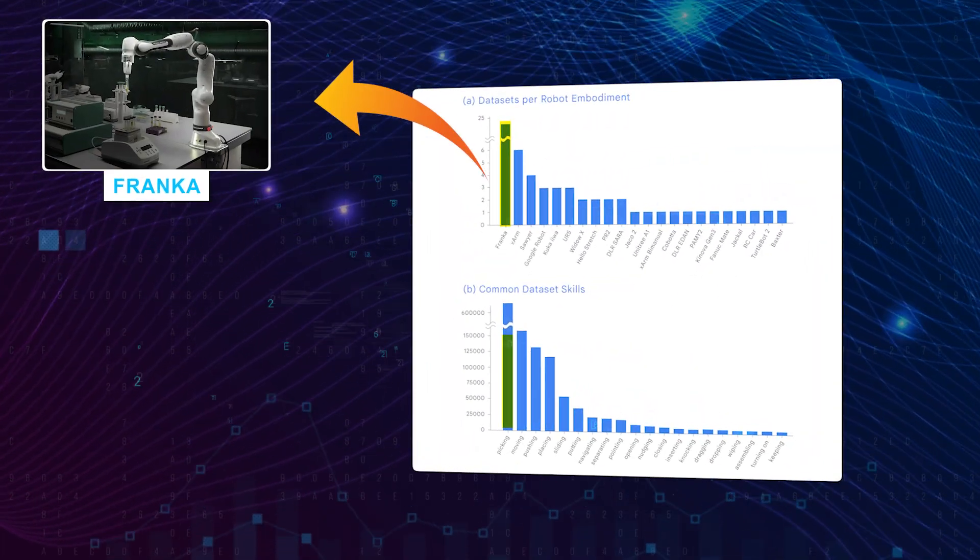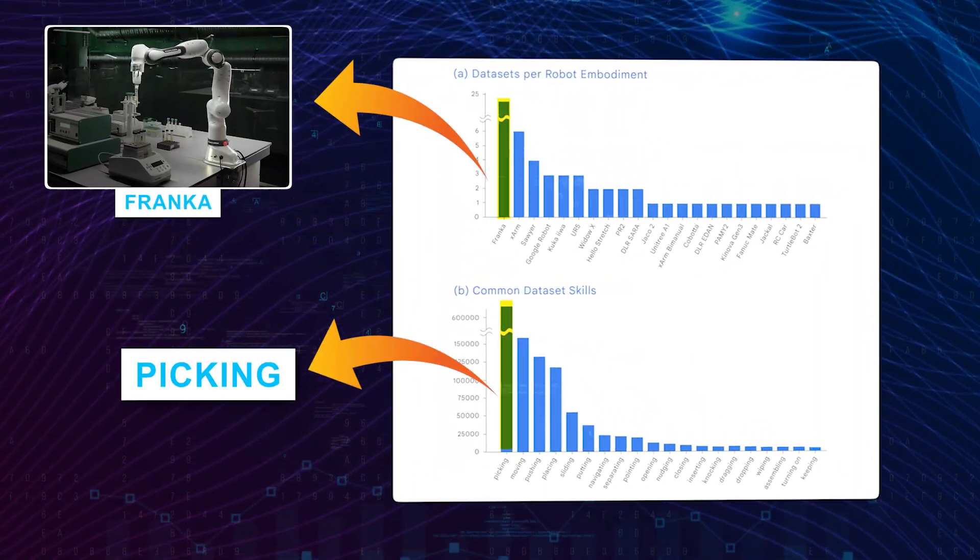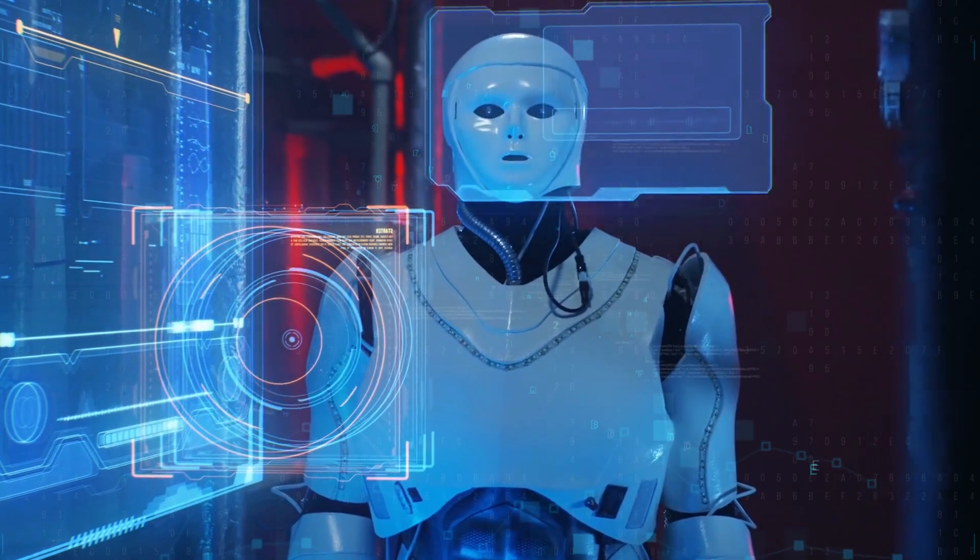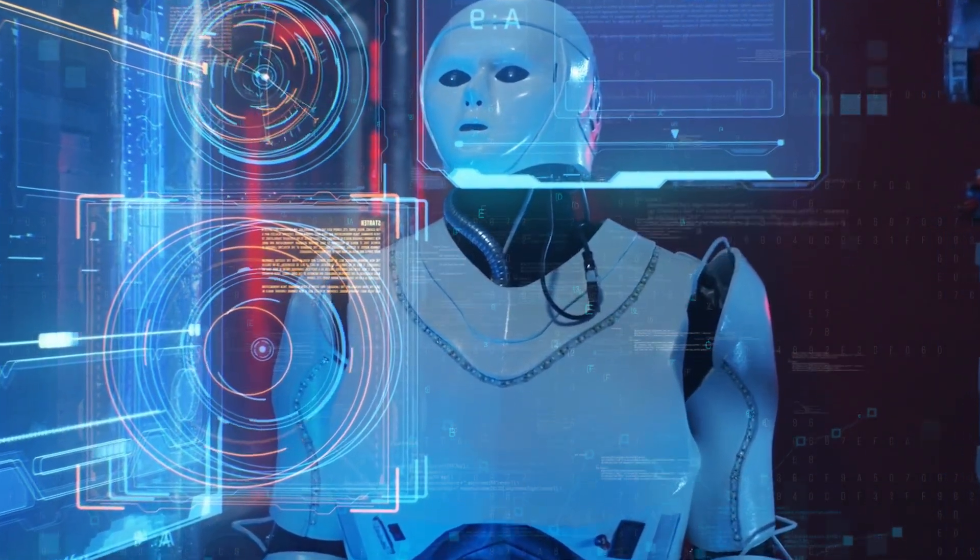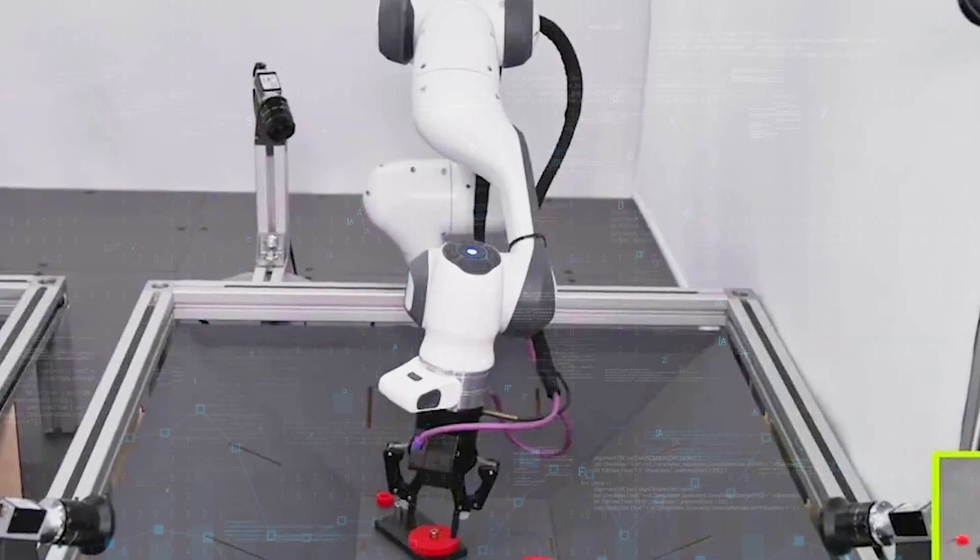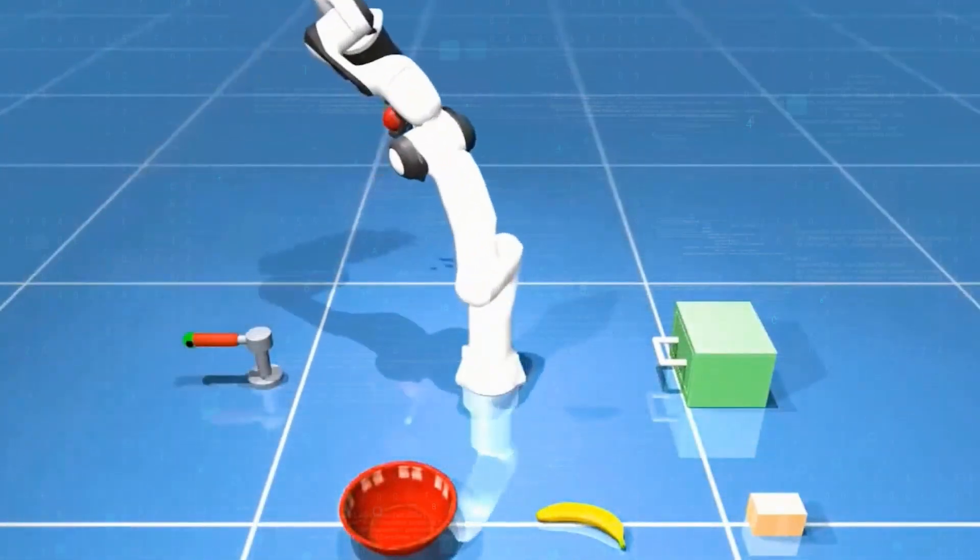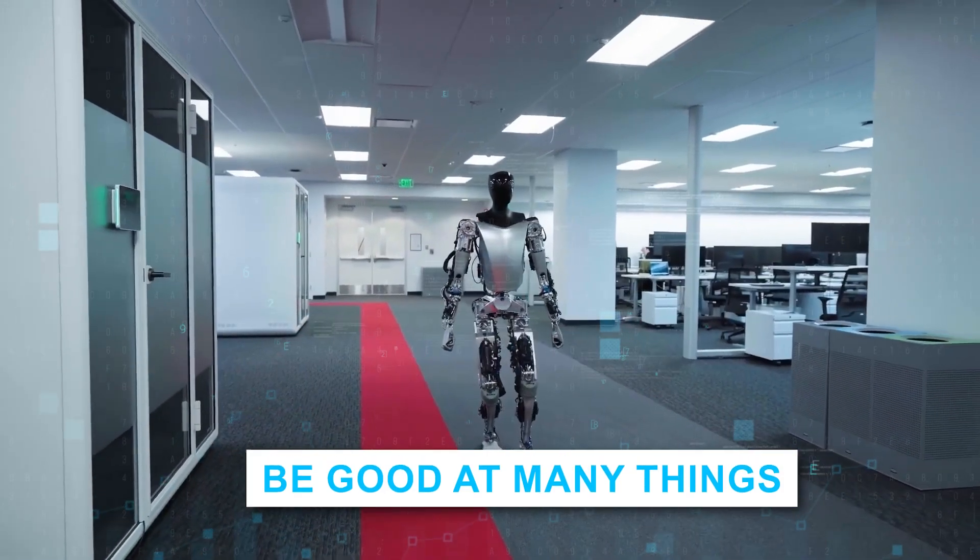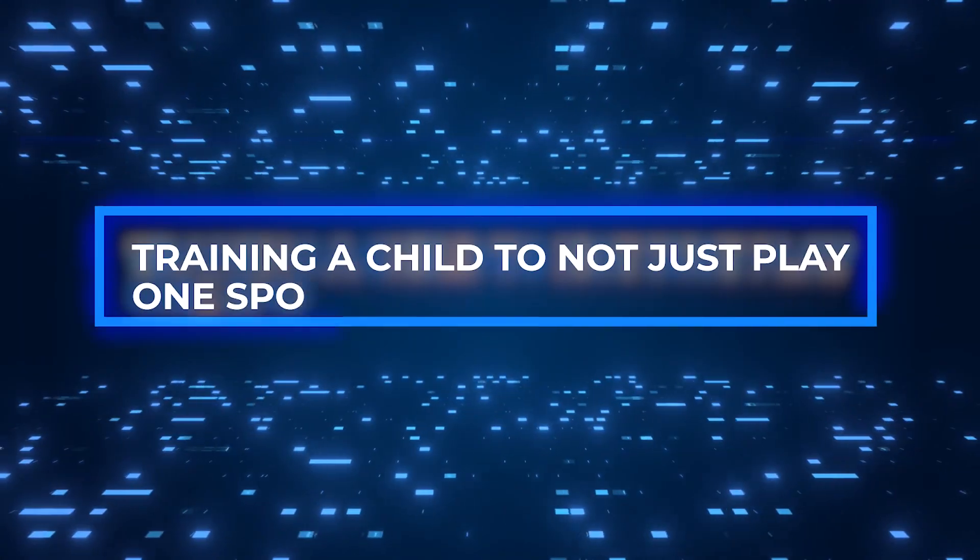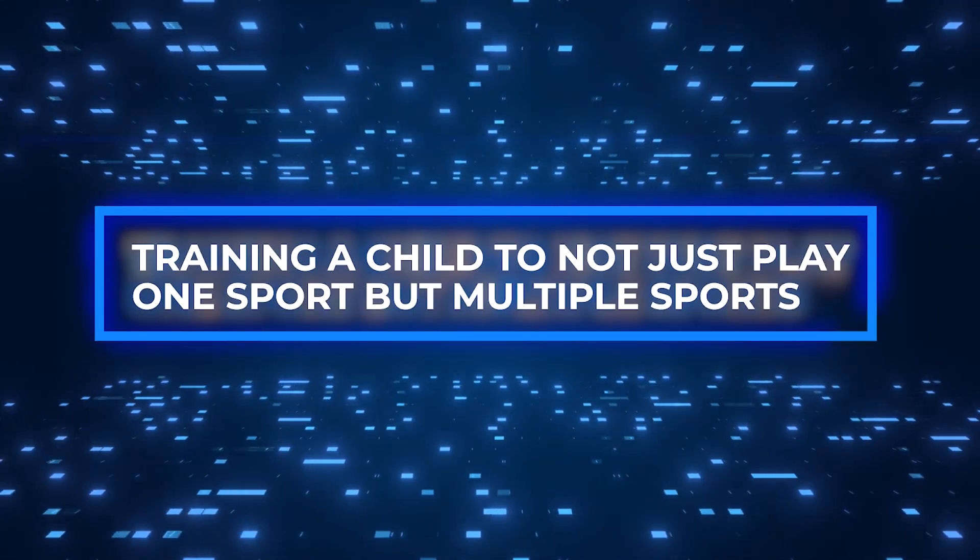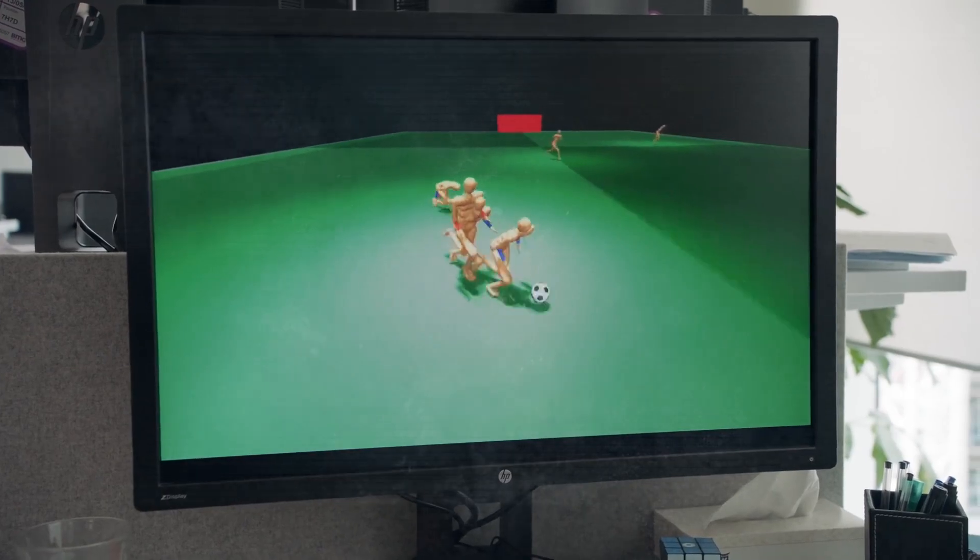This new dataset is changing that. It's like a shared library where robots can learn from a wide range of experiences. So instead of being good at just one thing, they can now adapt and be good at many things. It's almost like training a child to not just play one sport, but multiple sports, making them versatile athletes.